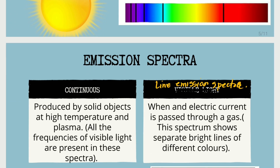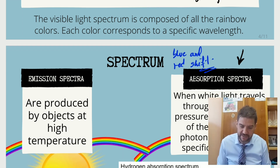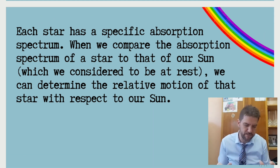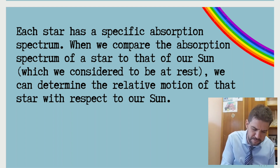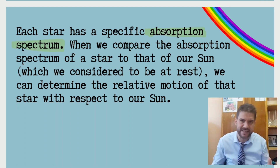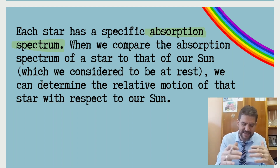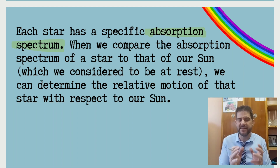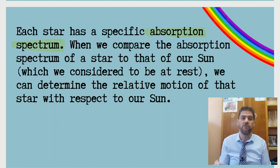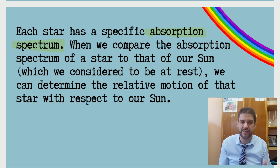We're going to focus on absorption spectra because it's the one that will help us understand red shift and blue shift. You can always pause the video and write the notes. Each star has a specific absorption spectra. When we compare the absorption spectra of a star to that of our sun, we can detect the relative motion of the star — whether it is moving away from us or towards us.